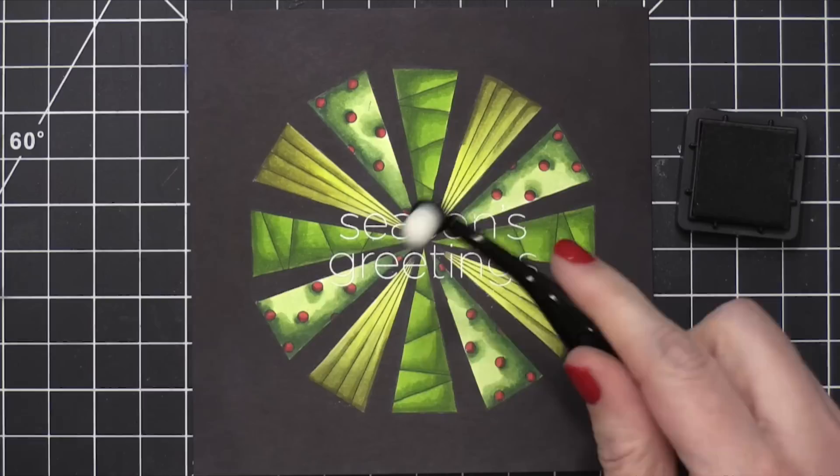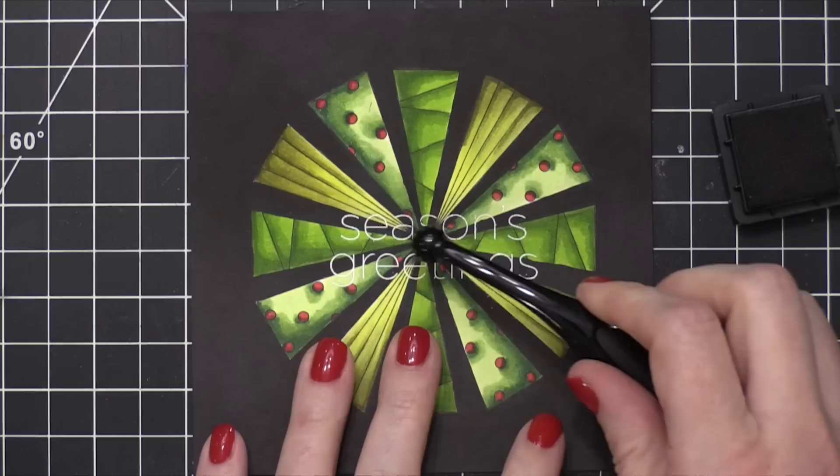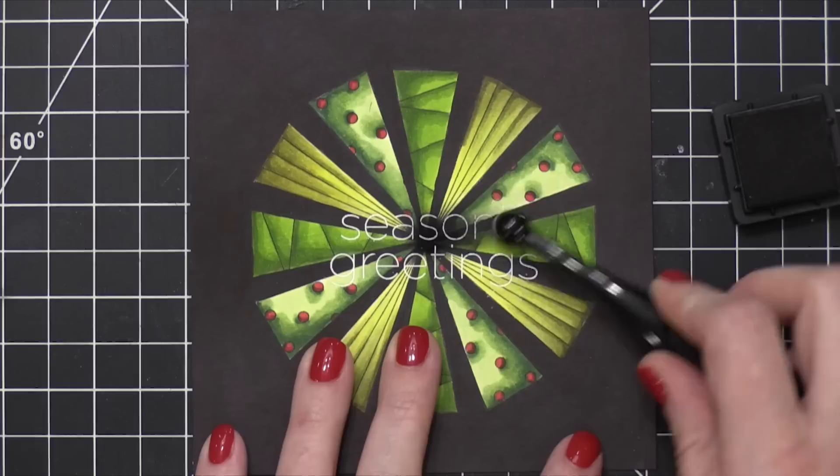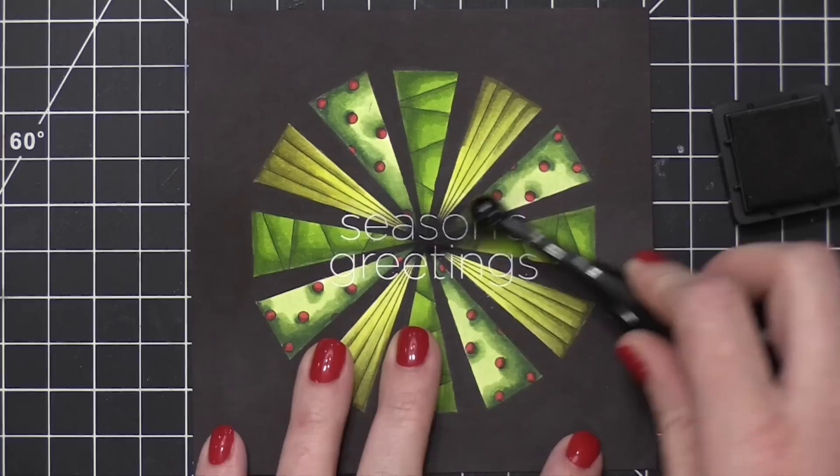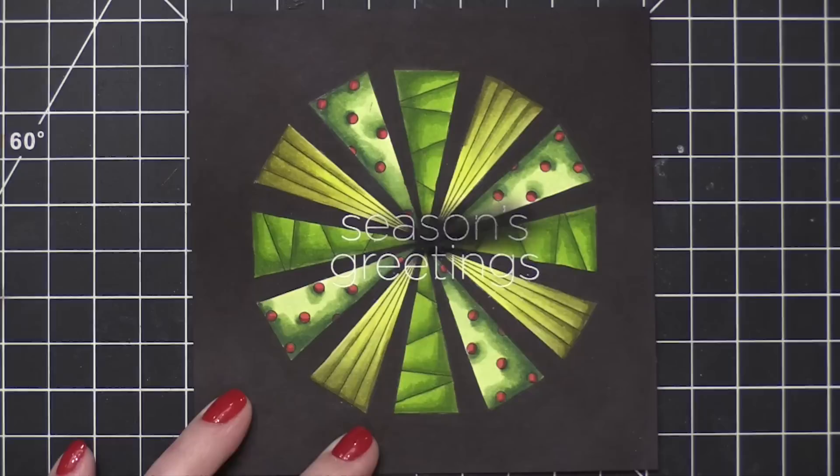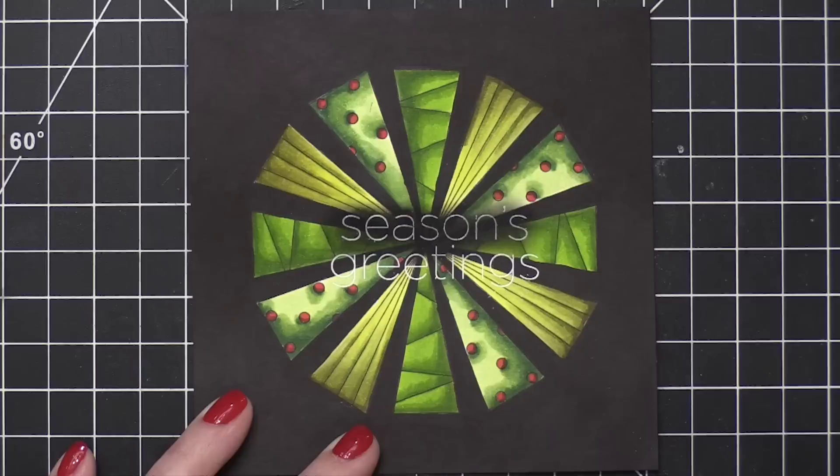Now, you'll notice that the words sort of get lost with the high contrast of the trees, so I'm going to use this little itty-bitty blender brush from Honey Bee with some Distress Black Soot ink, and I'm going to very gently blend over the top of these words, and it's going to darken the area behind the words. Because I did heat embossing, and the heat embossing is a slick surface, this ink is not going to stain the white words or stick to any of my greeting.